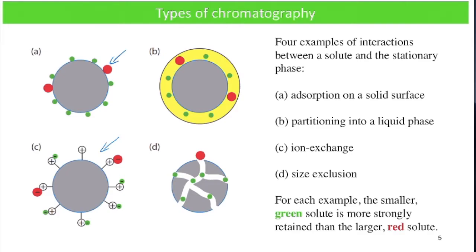Type C is called ion exchange chromatography, similar to one of the experiments done in lab. In this case it looks like anion exchange chromatography. On the surface of the stationary phase there are ions that can be exchanged with other ions of the same charge. If the surface is saturated with small green negative ions and we introduce the analyte — the red anions — those red anions would exchange with the green anions, allowing the green anions to flow out of the column. Later, we can change the buffer or mobile phase to elute the red anions and collect them for analysis.